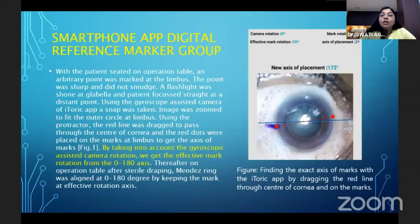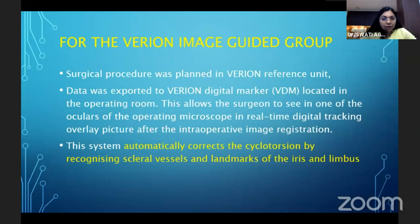The smartphone marking was done by taking into account the gyroscope-assisted camera rotation to get the effective mark rotation from 0 to 180 degrees, and then the Mendez ring was accordingly applied. For the Verion image-guided group, it automatically corrects for cyclotorsion by recognizing the scleral landmarks of the iris and limbus.